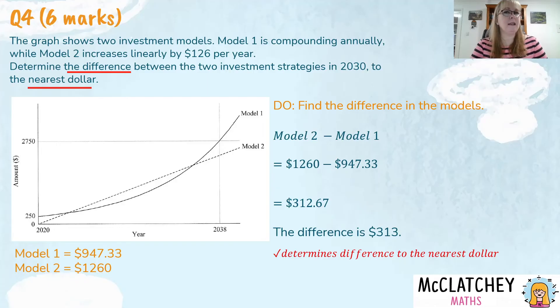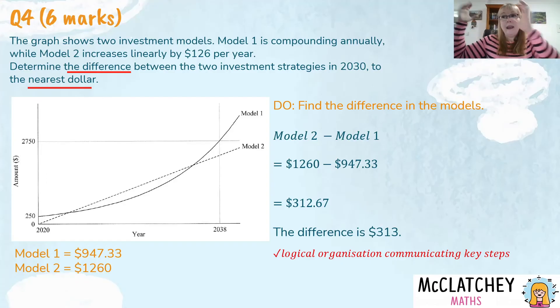Now you might be wondering, what about a six mark? Isn't it finished? Yes, it is. But the QCAA also awarded a six mark for logical organization, communicating key steps. So it's important that when you're doing a question like this on your complex paper, that you are communicating your steps. So that you separate model one's work, you actually label it model one, and then model two's work and label it model two. Things like dollar signs are a logical organization set, rounding correctly, that sort of thing.